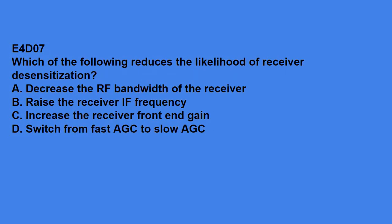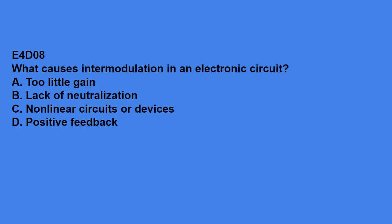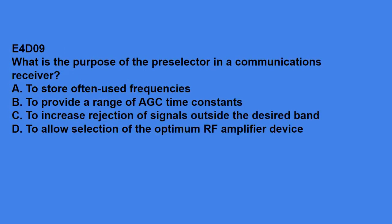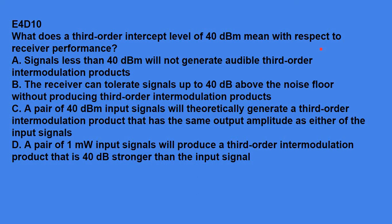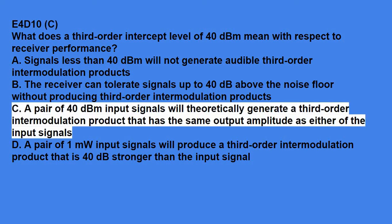E4D07, which of the following reduces the likelihood of receiver desensitization? Answer is, decrease the RF bandwidth of the receiver. E4D08, what causes intermodulation in an electronic circuit? Answer is, non-linear circuits or devices. E4D09, what is the purpose of the preselector in a communications receiver? Answer is, to increase rejection of signals outside the desired band. E4D10, what does a third-order intercept level of 40 dBm mean with respect to receiver performance? It means a pair of 40 dBm input signals will theoretically generate a third-order intermodulation product that has the same output amplitude as either of the input signals.